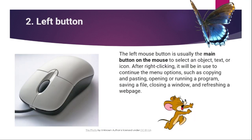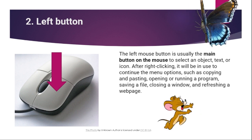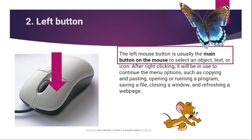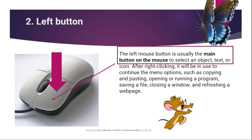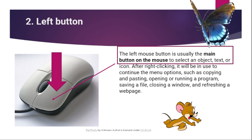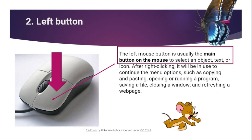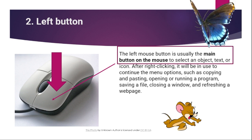Next, we have the left button. The left mouse button is usually the main button on the mouse to select an object, text, or icon. After right-clicking, it will be in use to continue the menu options such as copying and pasting, opening and running a program, saving a file, closing a window, and refreshing a webpage.